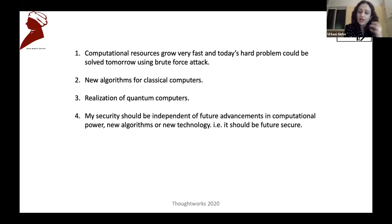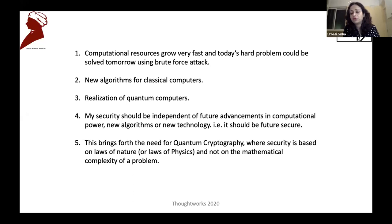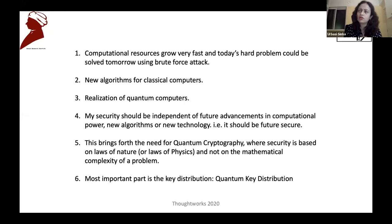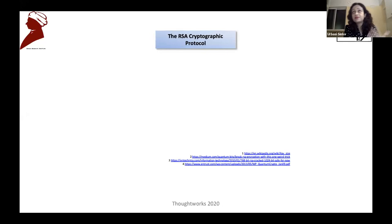Unconditional security is not possible using classical cryptography. Computational resources grow very fast, and today's hard problem could be solved tomorrow using a brute force attack. New algorithms can also come for classical computers. My security should be independent of future advancements in computational power, new algorithms, or new technology — it should be future-secure. This brings forth the need for quantum cryptography, where security is based on laws of nature and not on the mathematical complexity of a problem.